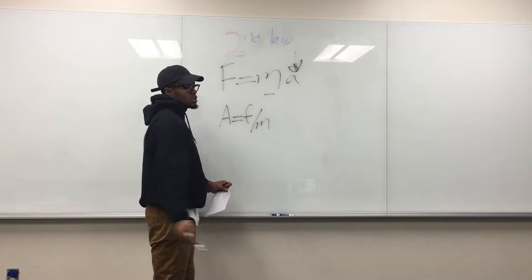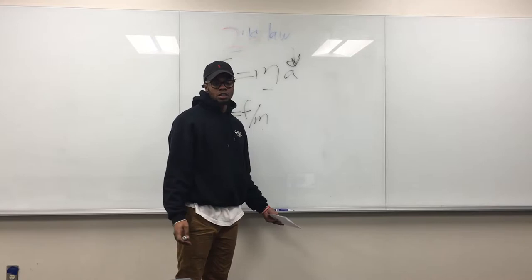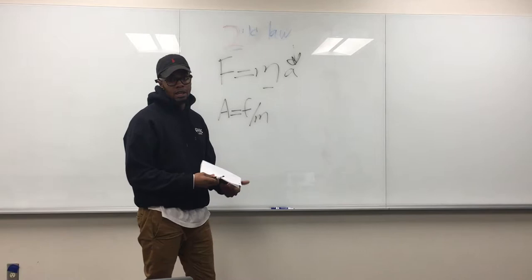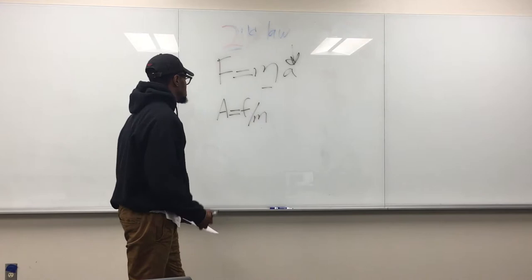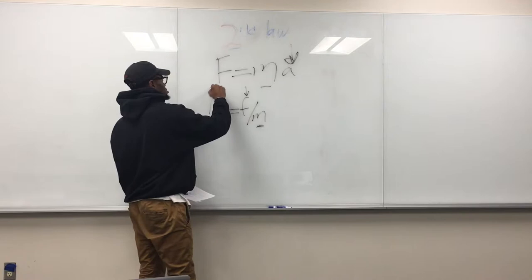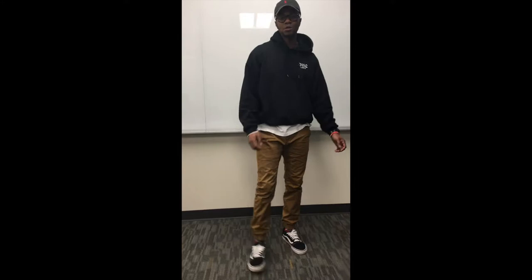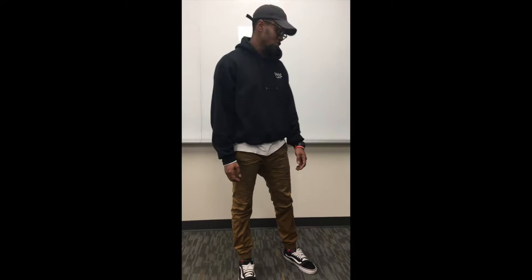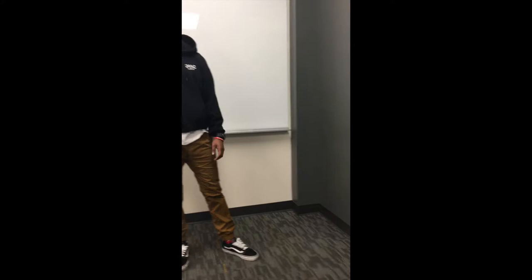A good example of this is using starting blocks. The reason why sprinters use starting blocks when they run is to maximize their acceleration, and acceleration at the start is very important in sprint races because of the short duration of the race. I'm going to give you an example of starting blocks, but sadly we didn't have any — they're like $600. So I'm going to use this wall instead. It'll be similar to swimming when you propel off the wall — same concept.